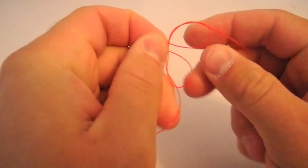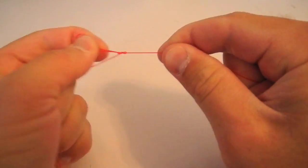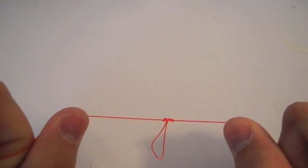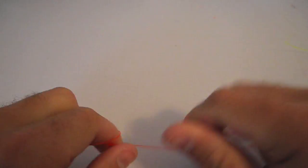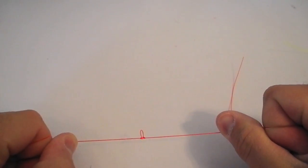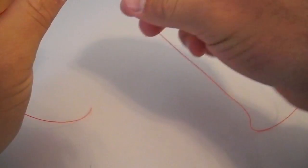Once I've done that I just pull tight and there's my loop. And you can sometimes pull it and make it a little bit smaller.